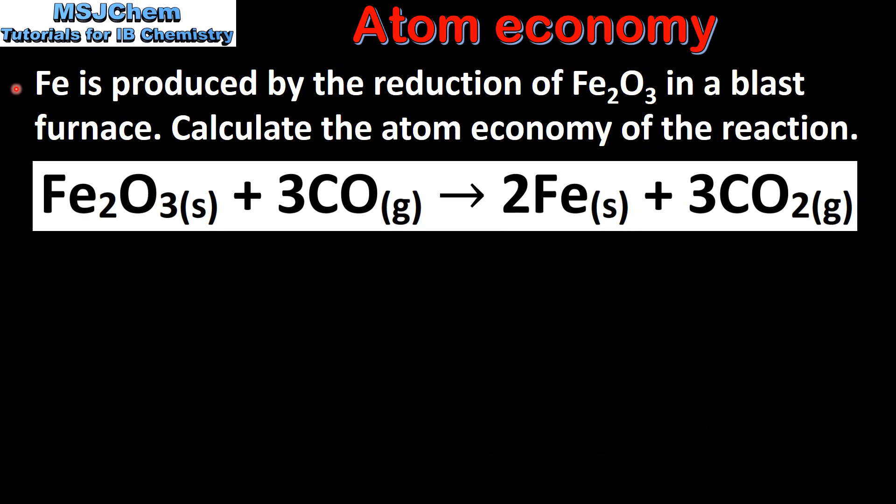Iron is produced by the reduction of iron oxide in a blast furnace. Calculate the atom economy of the reaction. Here we have the balanced chemical equation for the reaction: iron oxide reacts with carbon monoxide to form iron and carbon dioxide.